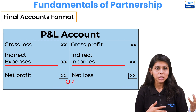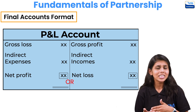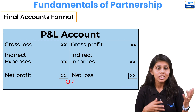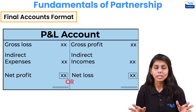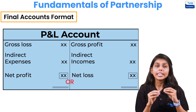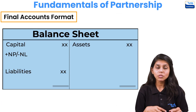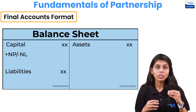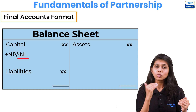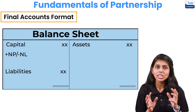The profit and loss account starts with either gross profit or gross loss. Then all indirect incomes and expenses are posted — interest received, discount received, office expenses, admin expenses, selling and distribution expenses, and so on. The net figure would be either net profit or net loss, which is transferred to the balance sheet. In the balance sheet we have assets, liabilities, and capital — net profit is added to capital and net loss is subtracted.